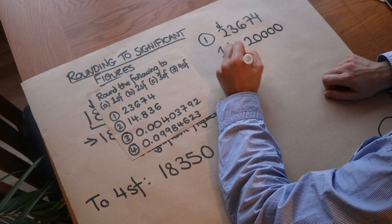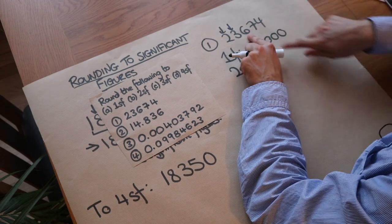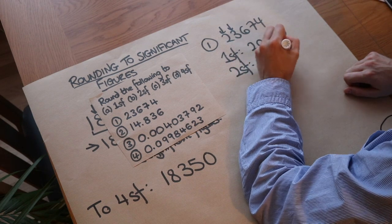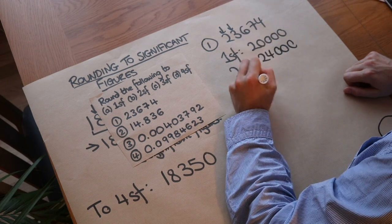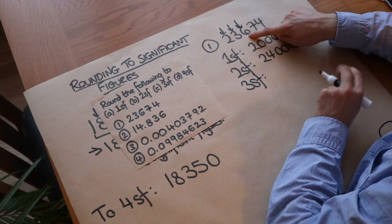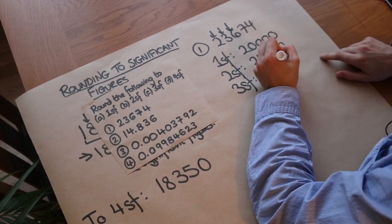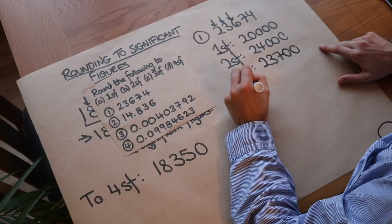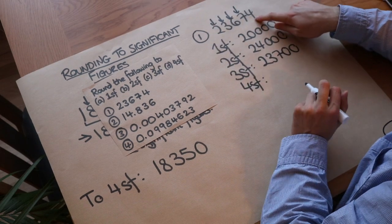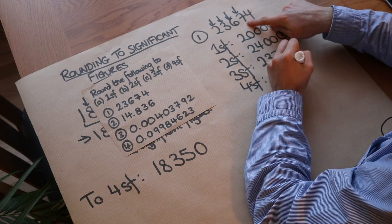For two significant figures, we keep up to the second digit and check the next digit. Is it greater than or equal to five? Yes it is, so the 3 goes up to 4, giving 24,000. For three significant figures, we check the next digit — yes, greater than or equal to five — so that 6 goes up to 7, giving 23,700. For four significant figures, we go up to the 7, but the 4 is not greater than or equal to five, so the 7 stays, giving 23,670.